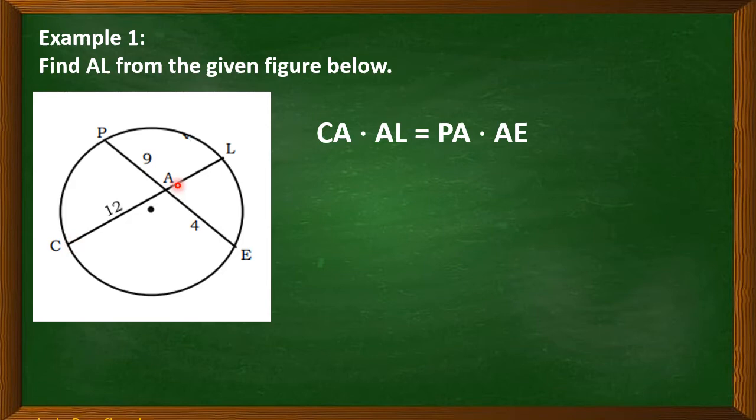CA is 12. So we have 12 multiplied by AL. PA is 9, then AE is 4. Now let's simplify by multiplying. So 12 times AL, we have 12AL.